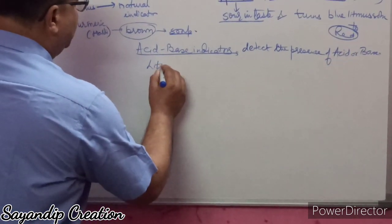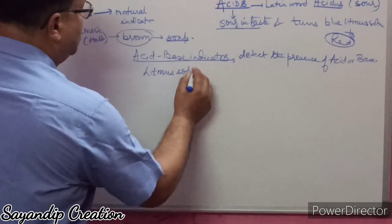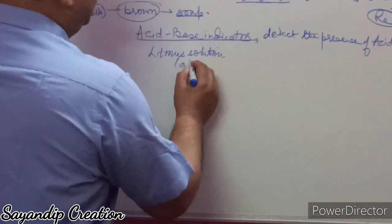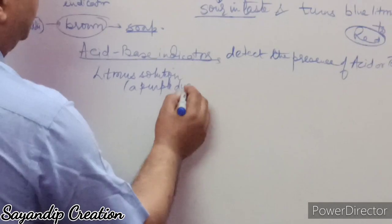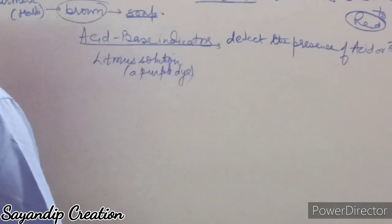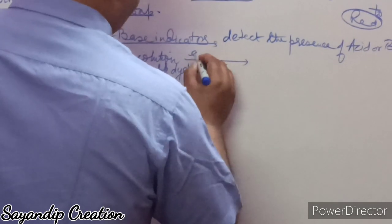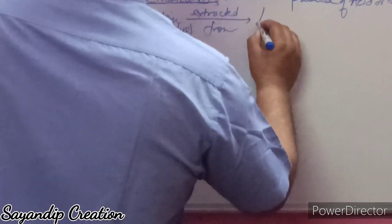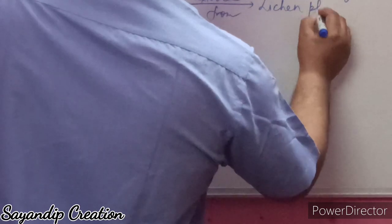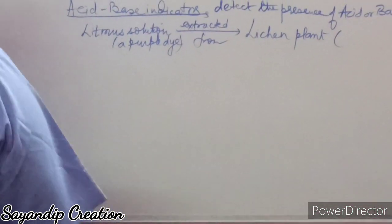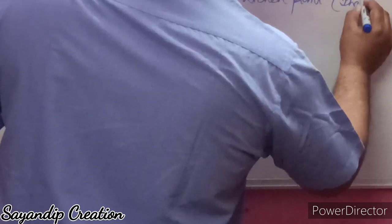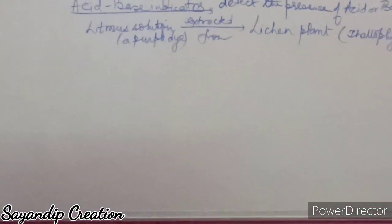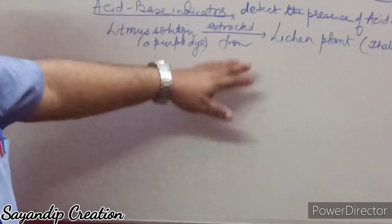If you take litmus solution, it is a purple dye in color, and it is extracted from the lichen plant, which belongs to the Thallophyta family — which you have studied in Biology. So litmus solution is a purple dye obtained from the lichen plant of the Thallophyta family.